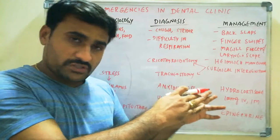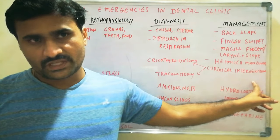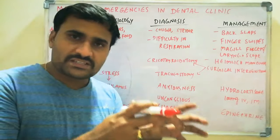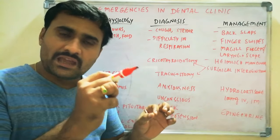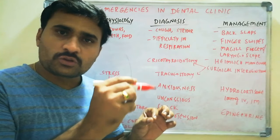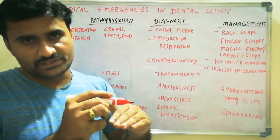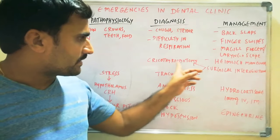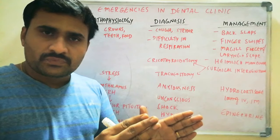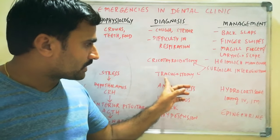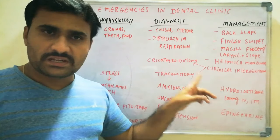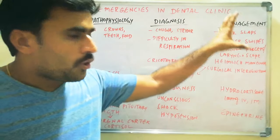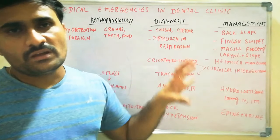If the Heimlich maneuver fails, surgical intervention is needed. The simplest and quickest emergency procedure is cricothyroidotomy — making an opening in the cricothyroid membrane located between the thyroid and cricoid cartilages. If there is more time and it is less emergent, tracheostomy — an opening in the trachea — can be performed. This is the step-by-step approach to expelling a foreign body.